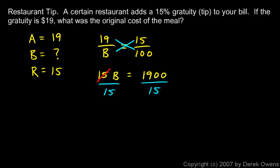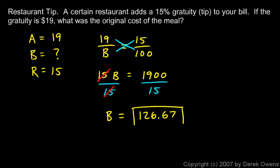The 15 cancels out on the left and I have B. B is 1900 divided by 15, and that comes out to $126.67. It's a pretty expensive meal, but that could perhaps be for a lot of people.